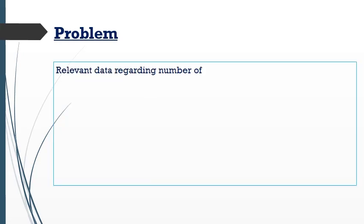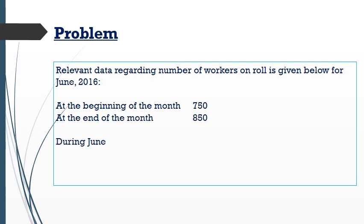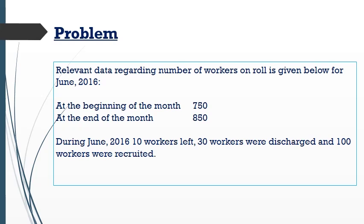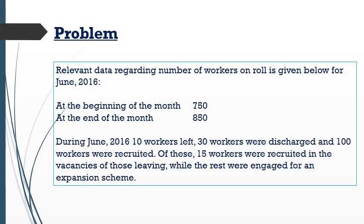The relevant data regarding number of workers on roll is given for June 2016. At the beginning of the month there were 750 employees; at the end of the month there were 850. During June 2016, 10 workers left the organization, 30 workers were discharged, and 100 workers were recruited. Of these, 15 workers were recruited to fill the vacancies of those who left, while the rest were engaged for an expansion scheme.